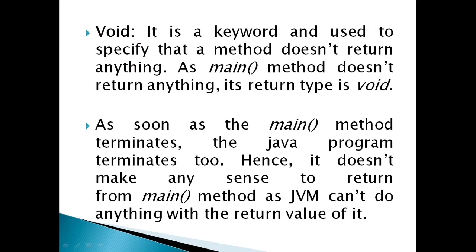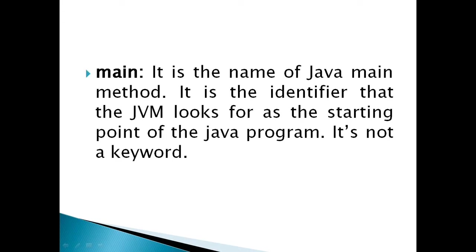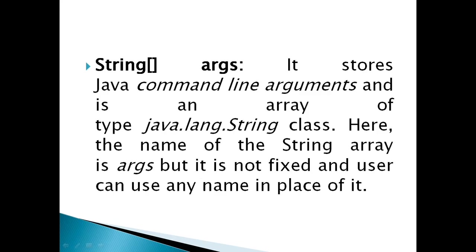Let us move to the next keyword, which is main. It is the name of the Java main method. It is the identifier that JVM looks for as the starting point of the Java program. It is not a keyword — it is just a name.